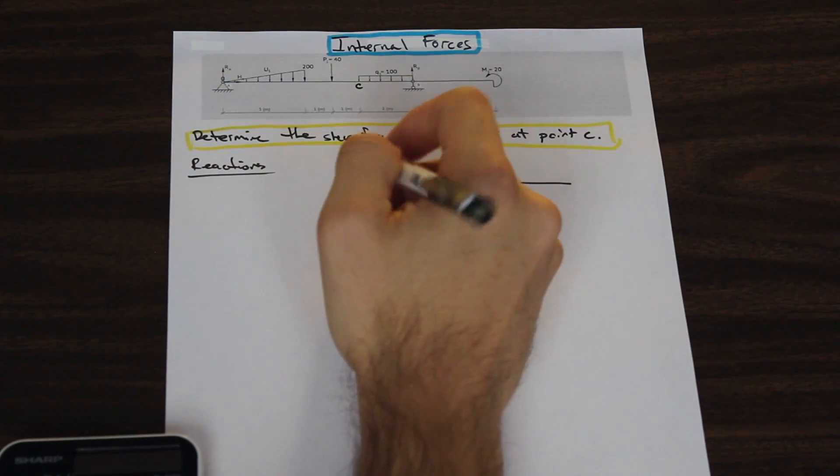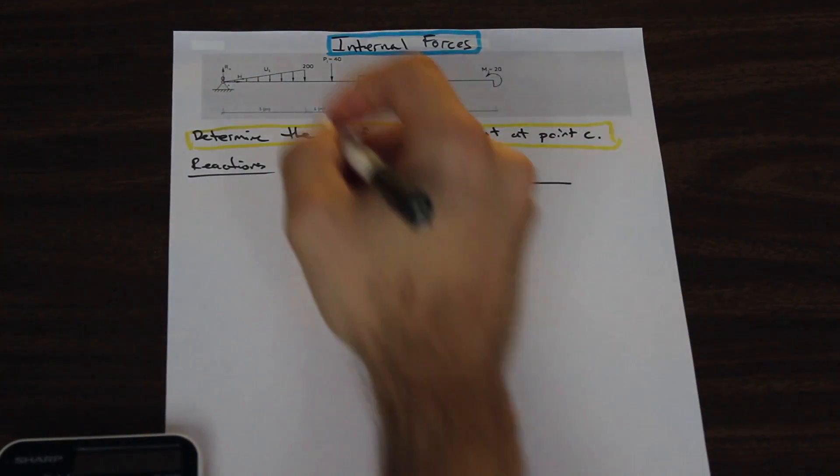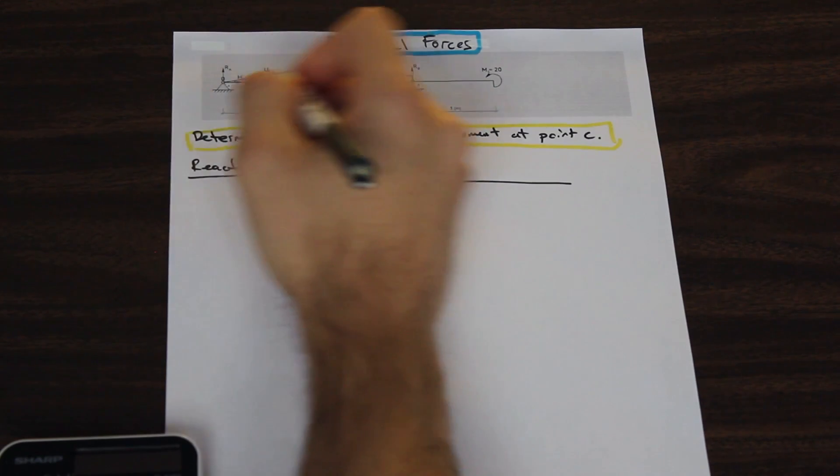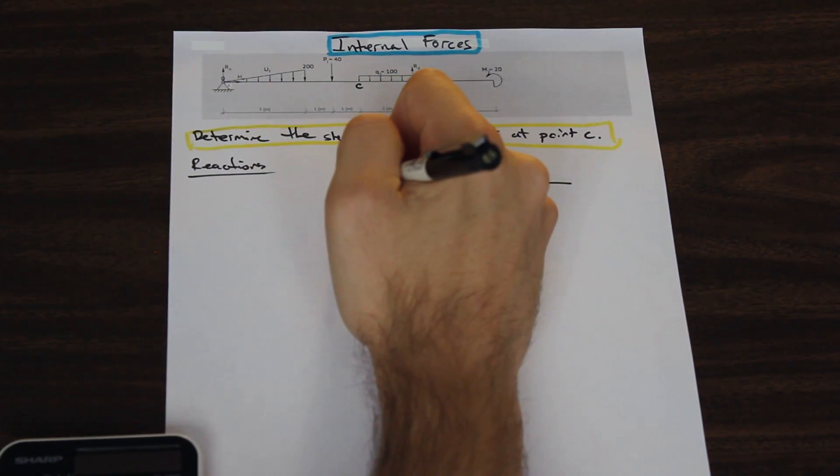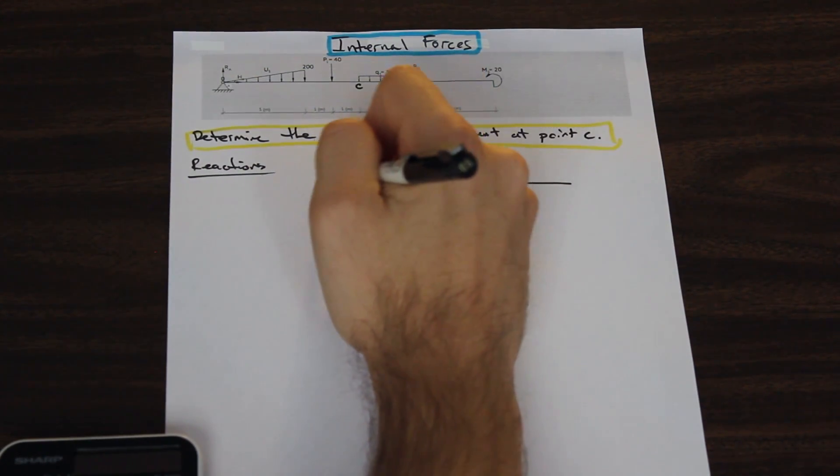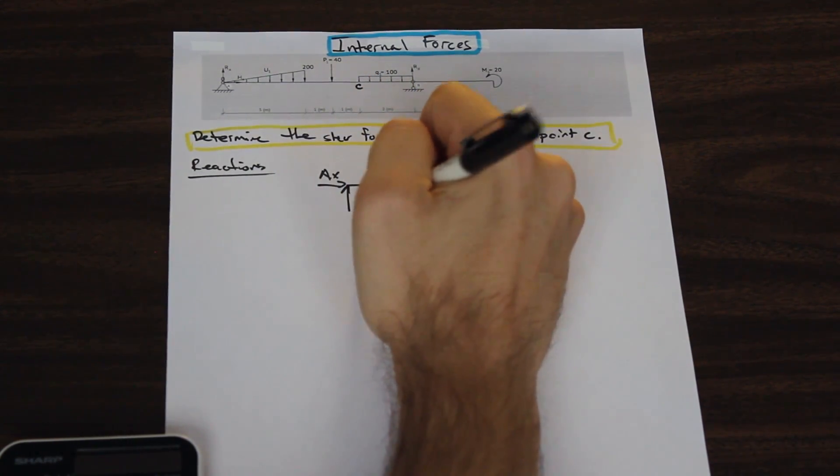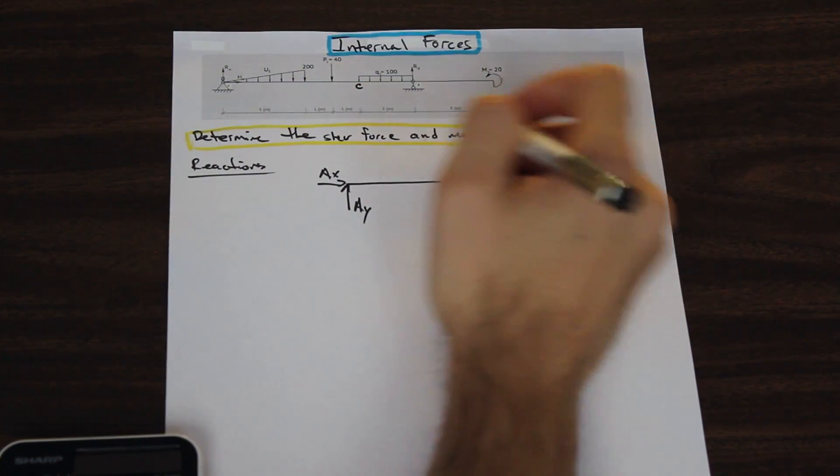We're going to draw a nice big diagram for this one. At point A, we have a pin. So we're going to write the reactions here. We have AX and AY. We have this triangular force here.